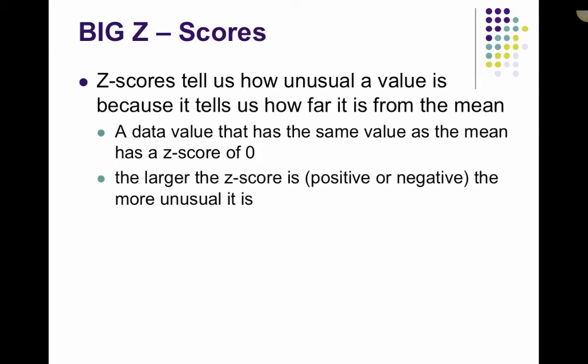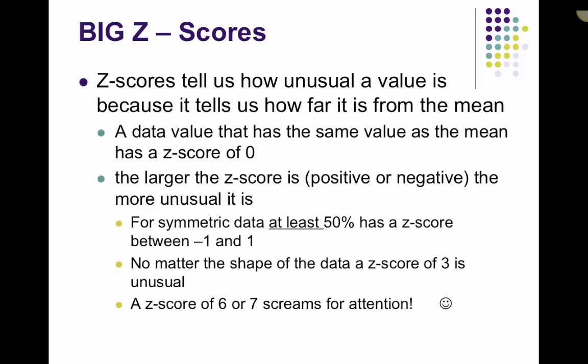A larger z-score, whether it's positive or negative, is going to be more unusual, again because it's further away from the mean. Again, a positive z-score just tells you that you're above the mean, a negative just tells you that you are below the mean. For symmetric data, at least 50% have a z-score between negative 1 and 1, or we would say that they are within one standard deviation.